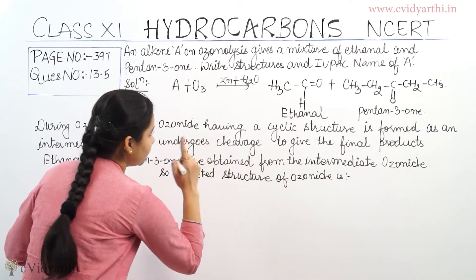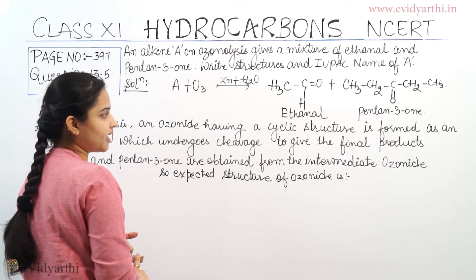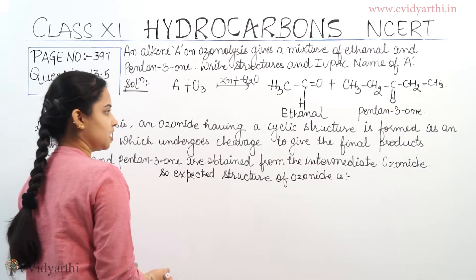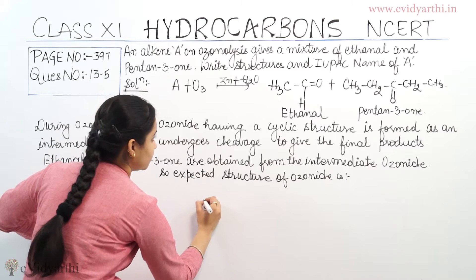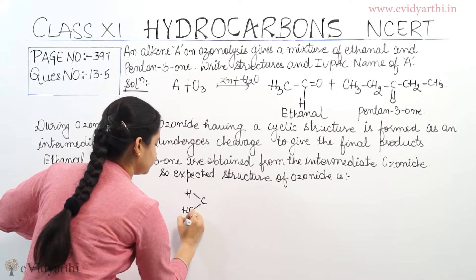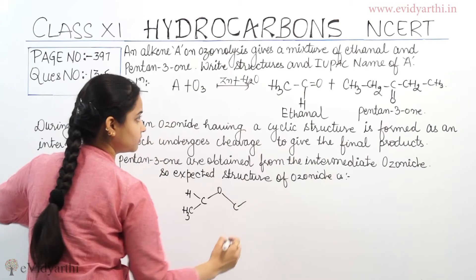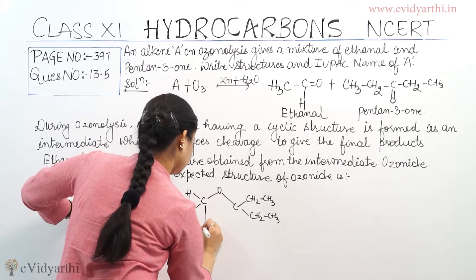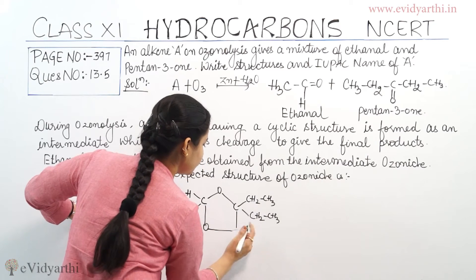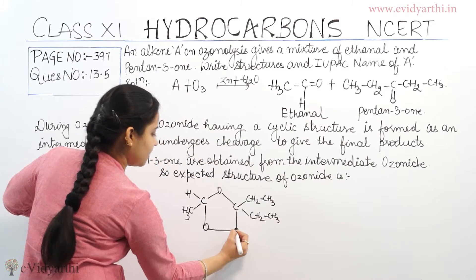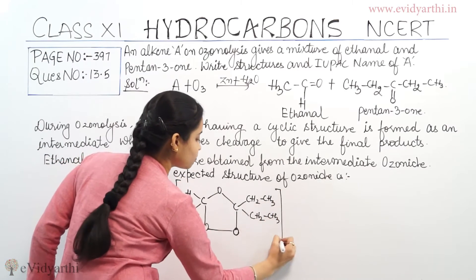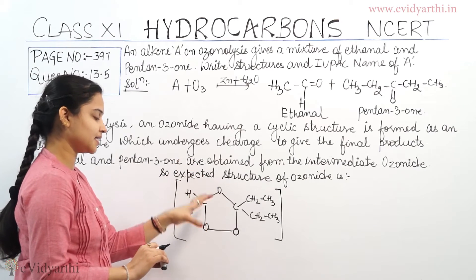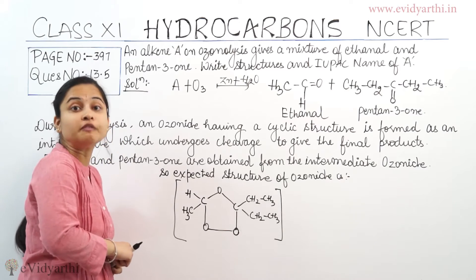The final product after the cleavage of the ozonide, which is formed as the cyclic intermediate, gives us ethanal and pentan-3-one. So now I will show you the expected structure of the ozonide. This ozonide would have formed if we obtained ethanal and pentan-3-one as products after ozonolysis of the alkene we need to find out.